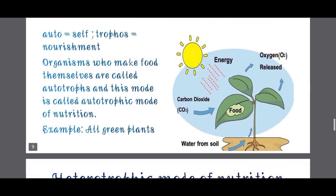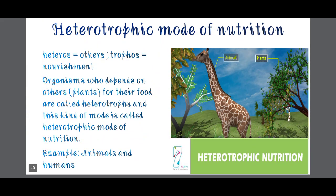Next we will study about heterotrophic mode of nutrition. 'Heterotrophic' is again made up of two words: 'hetero' means others and 'trophus' means nourishment - so other nourishment. Organisms who depend on other plants or organisms for their food are called heterotrophs, and this kind of mode is called heterotrophic mode of nutrition.